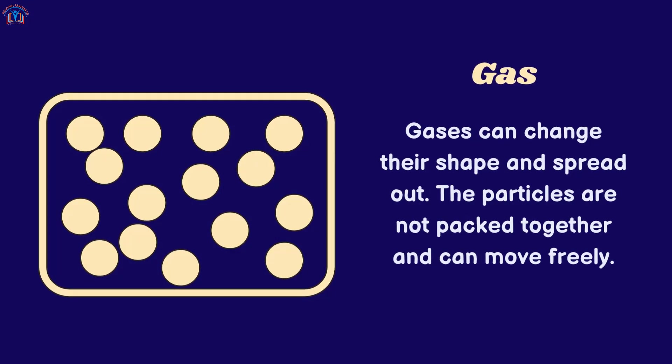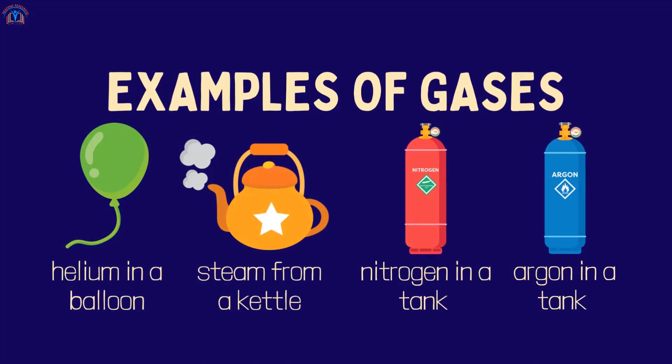Gases can change their shape and spread out. The particles are not packed together and can move freely. Here are a few examples of gases: helium in a balloon, steam from a kettle, nitrogen in a tank, and argon in a tank.